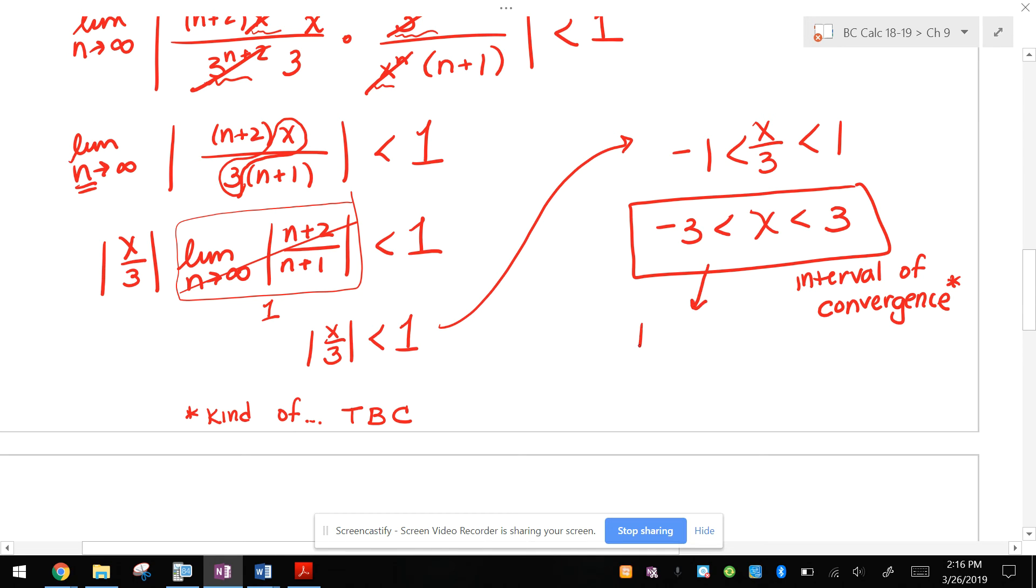What we can definitively talk about, though, is the radius of convergence. And the radius of convergence is half the width of the interval. So this interval goes from negative 3 to 3, which means it's 6 wide. So our radius of convergence is 3. That's true. That doesn't need an asterisk.